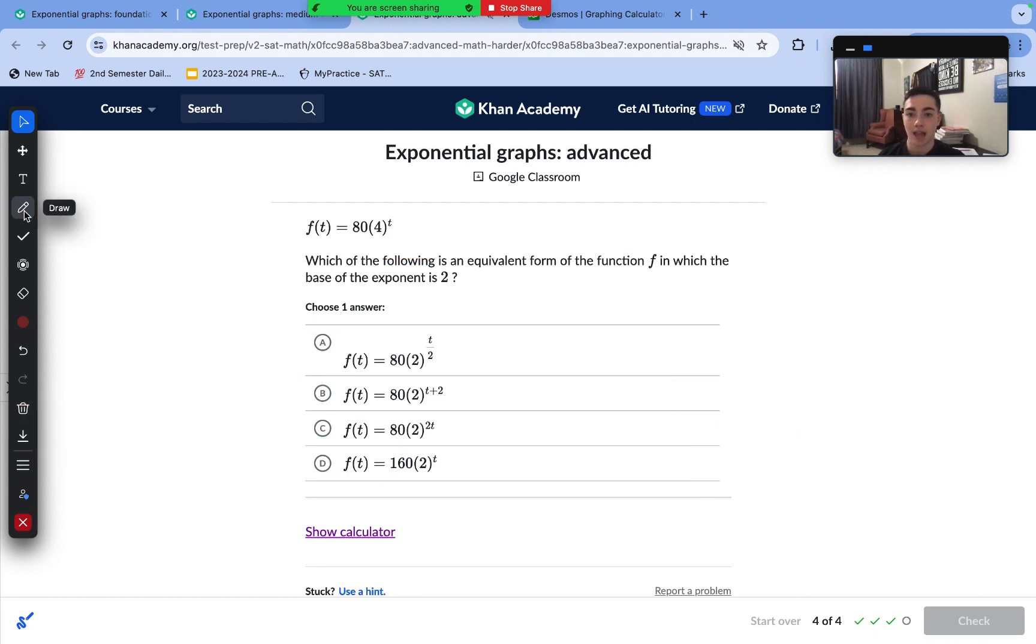On to our last question. We have this graph. Which of the following is an equivalent form in which the base of the exponent is 2? The base of the exponent is 2 means the B value needs to equal 2. How we can do this is that we can rewrite 4 as just 2^2 and then to the power of t. You may notice that according to our exponential rules, when it's a power of a power, we can just multiply. So this is also equivalent to 80(2^(2t)).